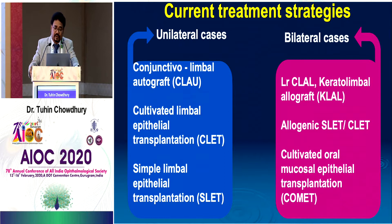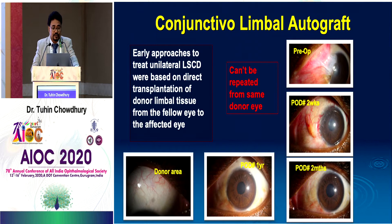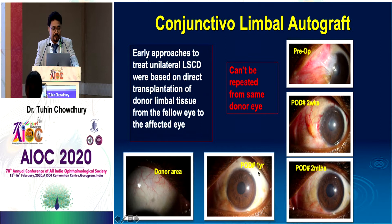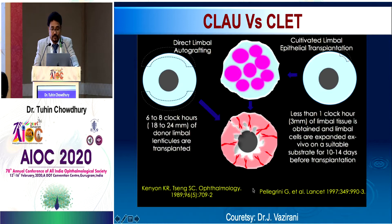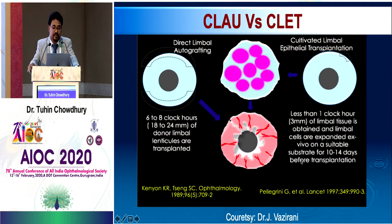In bilateral cases we can go for living related keratolimbal allograft, conjunctival limbal allograft, allogenic SLATE, or sometimes COMET — that is cultivated oral mucosal epithelial transplantation. For conjunctival limbal autograft, an early approach was used in cases with thermal injury where partial LSCD developed. The advantage is there is no chance of rejection, but the disadvantage is that we take three to four clock hours of limbal tissue from the fellow eye, which can lead to iatrogenic LSCD in that eye.